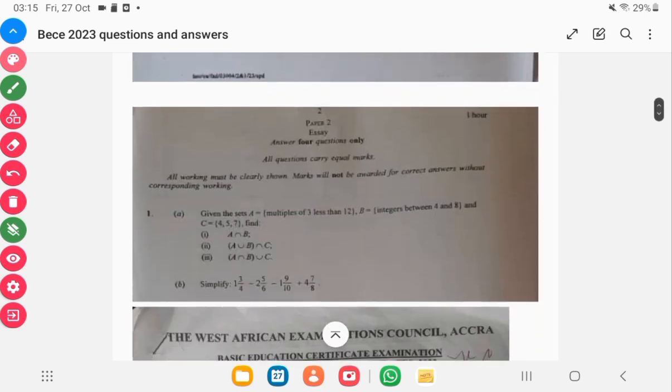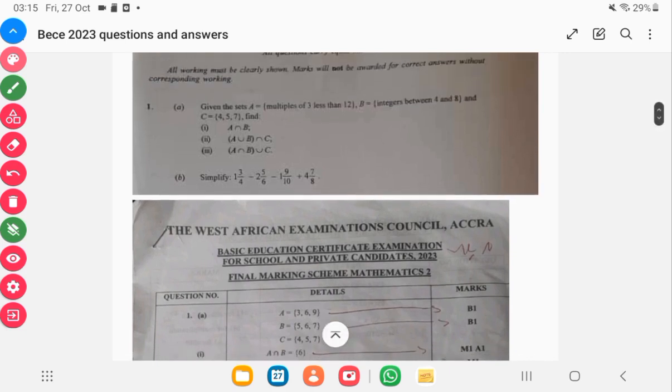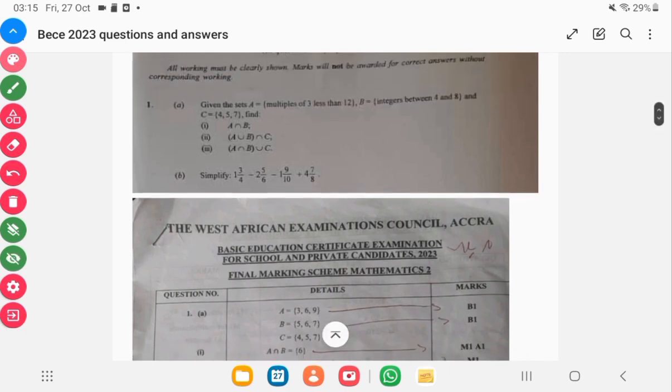Question one had to do with sets. If you watch my previous video on the review on the BECE 2023 mathematics, I have to do with sets. So we scroll down—you're supposed to list the members of A, B, and then C. If you look at the question carefully, the members of A, B, and C have been listed.